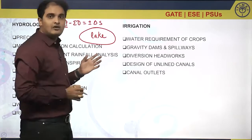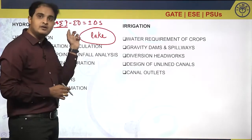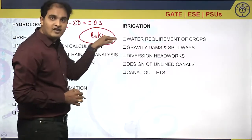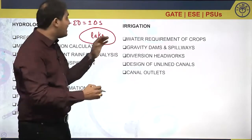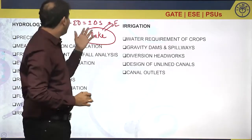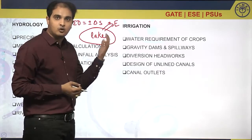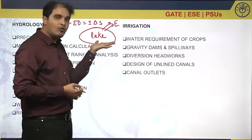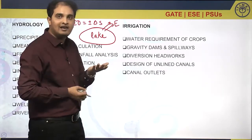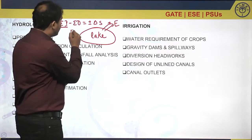Whatever water comes as input to the lake is the summation of all inputs, minus the summation of all outputs — that is, water flowing away from the lake or evaporating upward. From this equation, you can work out evaporation. Delta S means the change in storage: plus delta S when the water level in the lake is above the initial level, and minus delta S when the water level is below the initial level.